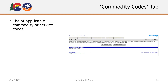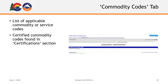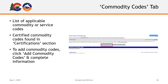The next tab is the Commodity Codes tab. Here, you can find a list of any commodity or service codes that have been assigned to your organization. These codes aren't specific to any project or contract but instead are provided to use in describing an organization's work areas. Certified Commodity Codes will be found in the Certification sections of your B2GNOW profile. If you find you need to add any commodity codes, click the Add Commodity Codes button above the list and complete the requested information.